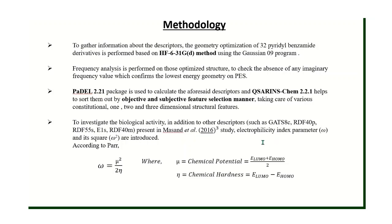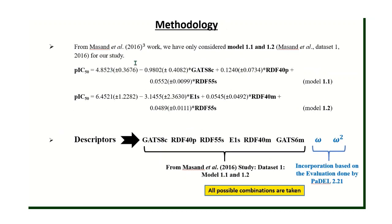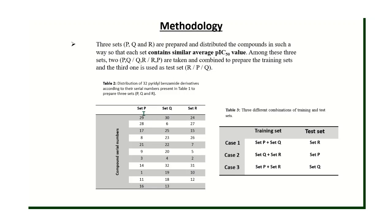To investigate the biological activity, I introduced two new descriptors in addition to those in the Masand et al. study: the electrophilicity index parameter omega (ω) and its square (ω²), calculated through Parr's equation. From the Masand et al. study we considered two models from dataset one — Model 1.1 and Model 1.2 — with their corresponding QSAR equations and descriptors. Along with those six descriptors, we introduced these two new ones, giving us new combinations to evaluate.